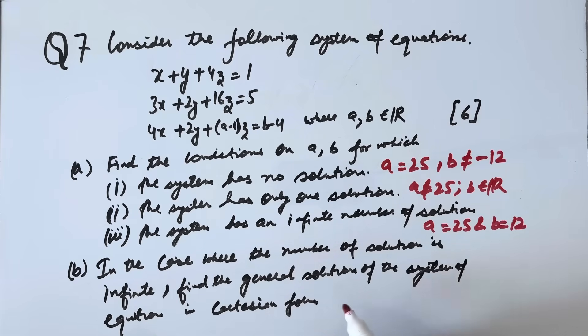And the number of solutions is infinite, then the general solution in Cartesian form will be given by (3-x)/8 = (y+2)/4 = z will be our final answer.